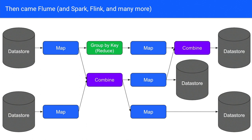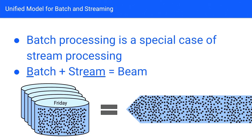All of this background to say: out of Flume came Beam. Beam was really trying to address one big issue — very often people would have one set of jobs for batch computation, like a daily job to compute some statistics, but also a similar job for streaming analytics. Beam came from the idea that batch processing is just a special case of stream processing. The name is silly — it's just batch plus stream equals Beam. If you're able to handle streaming data, all you need to do is change a flag and you've got a batch job.